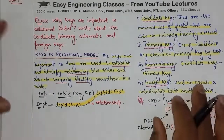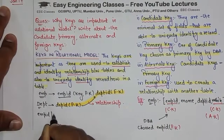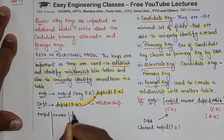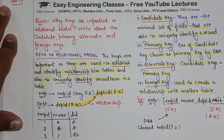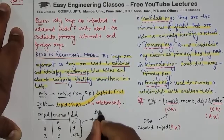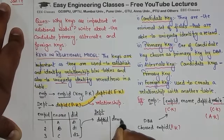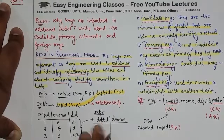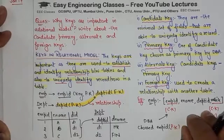Agar mein foreign key ka aapko poora bana ke dikhata hoon ek baar. Let us say humare paas is tarah se hai — employee ID, naam A, department D1; employee ID, naam B, department D1; employee ID, naam C, department D2. Aap dekho yahan jo department ID hai yeh unique nahi hai, but iska jo domain hoga woh kahan se hoga — department table se. Department table mein department ID as a primary key hogi, yaani sirf D1 aur D2 hoga, aur department name jaise HR aur Finance. So this is the concept of foreign key.